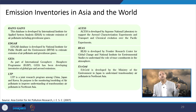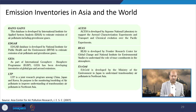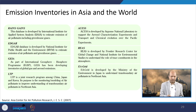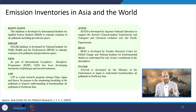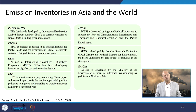Different emission inventories available in Asia and the world include RAINS/GAINS, developed by the International Institute for Applied Systems Analysis in Austria, to estimate emissions of air pollutants including greenhouse gases. EDGAR database is developed by the National Institute for Public Health and the Environment to estimate emissions of air pollutants and greenhouse gases. Similarly, GIA, LTP, REAS, and EDGAR Grid are also available. Different sets of pollutants have been considered in these emission inventories, and worldwide researchers use them.